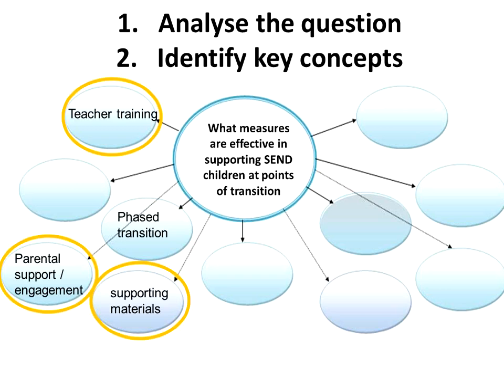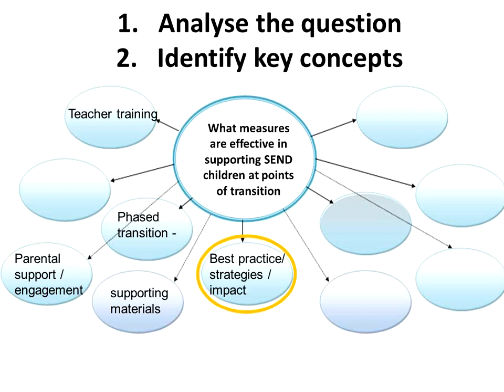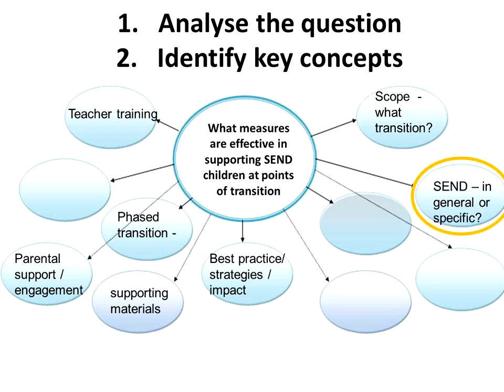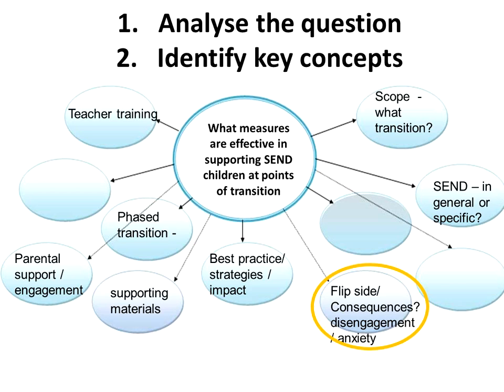Here are some aspects we might want to consider. We might want to look at teacher training as one of the effective measures, or consider the parental role in transition or the supporting materials given. Maybe we want to search for strategies or best practice in this area. We also need to consider the scope — what transition? Is it from primary to secondary, or from reception to primary, or from one year to another? And is there a specific SEND we want to look at more closely? And is there a flip side or consequence to a negative transition? There might be literature on this too.